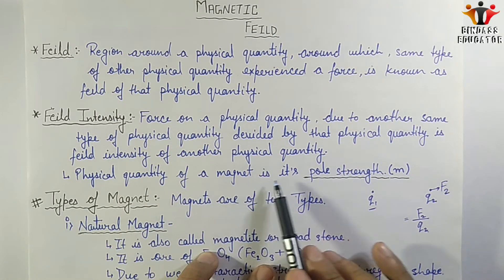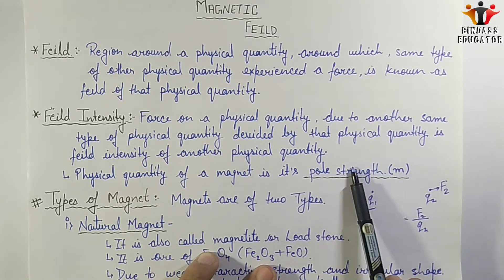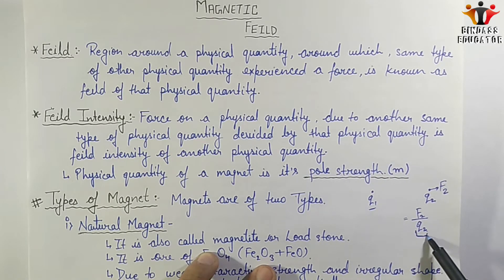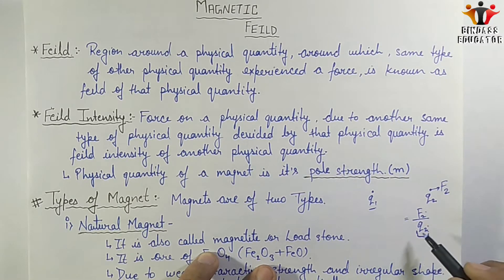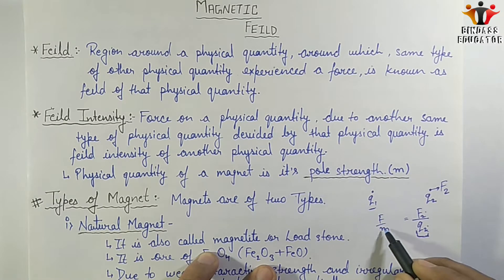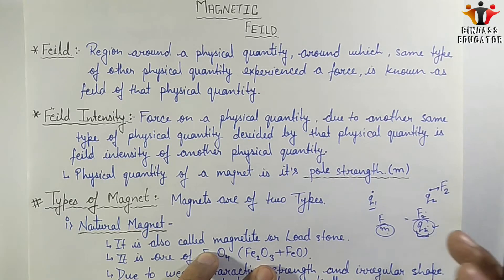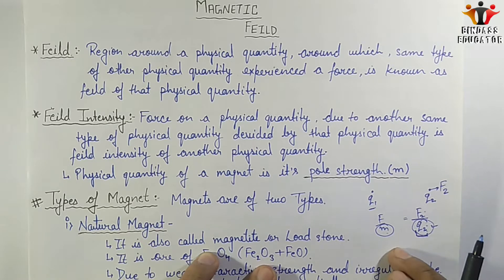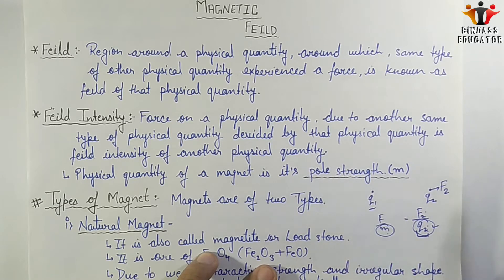The physical quantity of a magnet is its pole strength. So in the case of magnetic force, the relevant physical quantity is pole strength. Just as electric force involves charge, magnetic force involves pole strength, and we will study what pole strength is shortly.